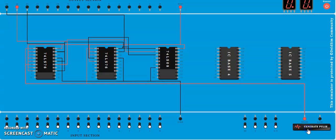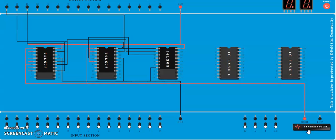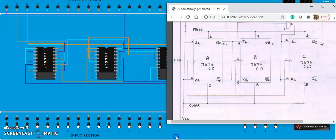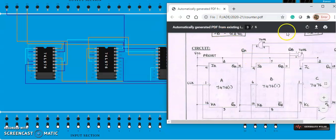Start providing the clock: one, two, three, four, five, six, seven, zero — it keeps counting from zero to seven and then resets back to zero. Now we'll do the changes within this circuit for different modes. We need to switch off the trainer kit first. This was for mod 8.